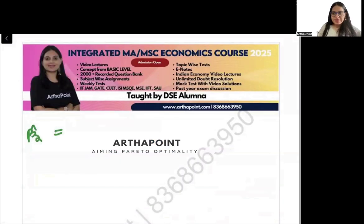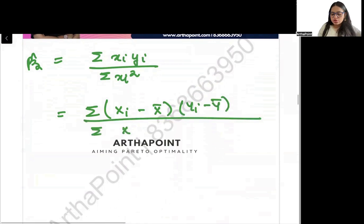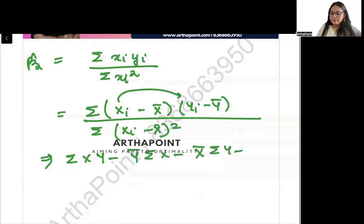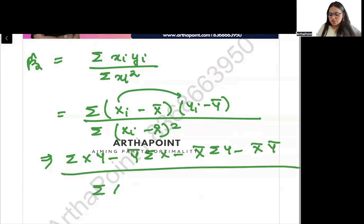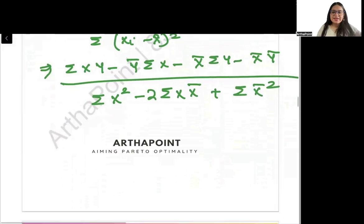Beta_2 hat can be written as summation of small x_i y_i divided by summation of small x_i squared. If we expand this, it becomes summation (x_i minus x-bar)(y_i minus y-bar) upon summation (x_i minus x-bar) squared. Opening this up, you get summation xy minus y-bar times summation x minus x-bar times summation y minus x-bar y-bar, upon summation x-squared minus summation x times x-bar times 2 plus summation x-bar squared.